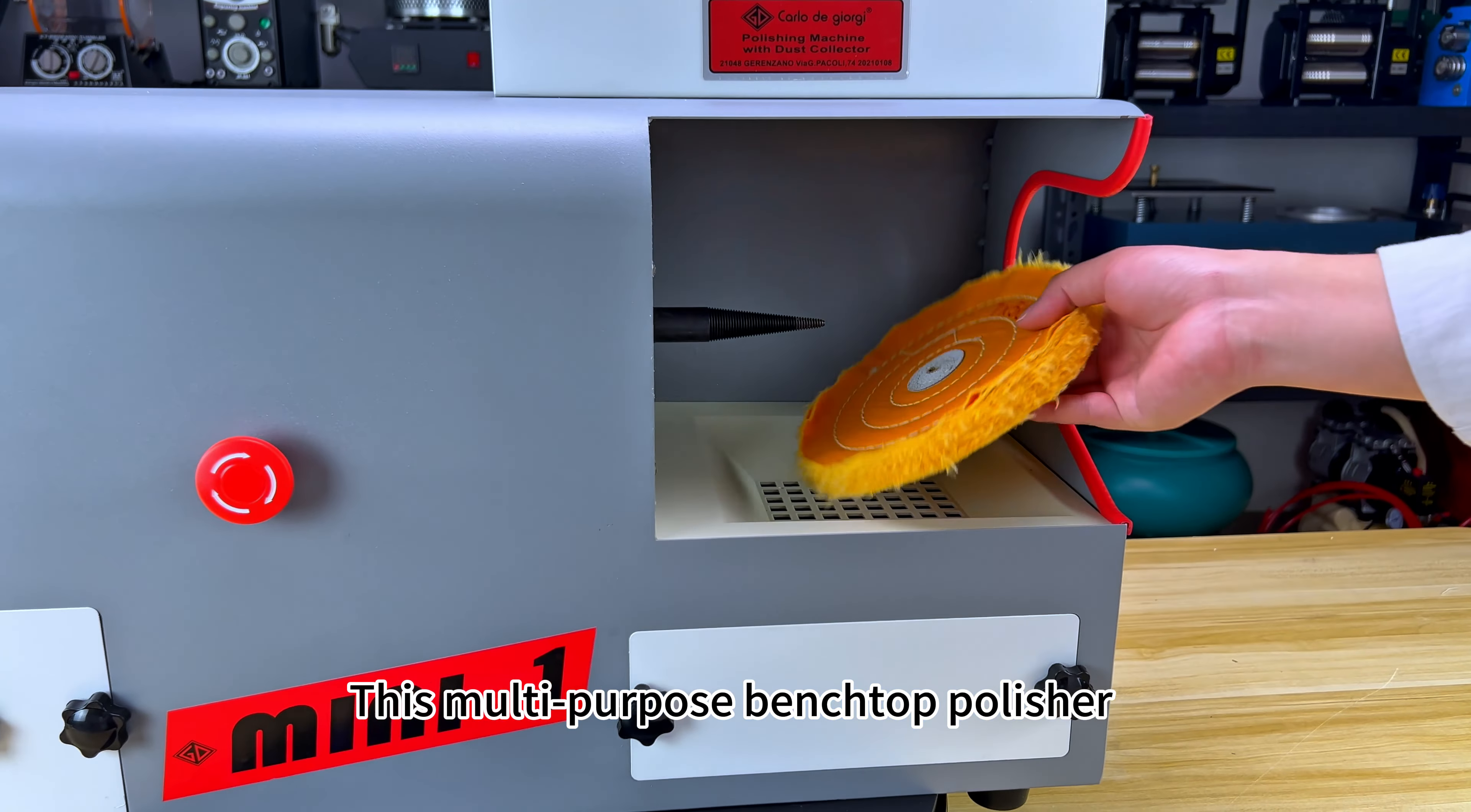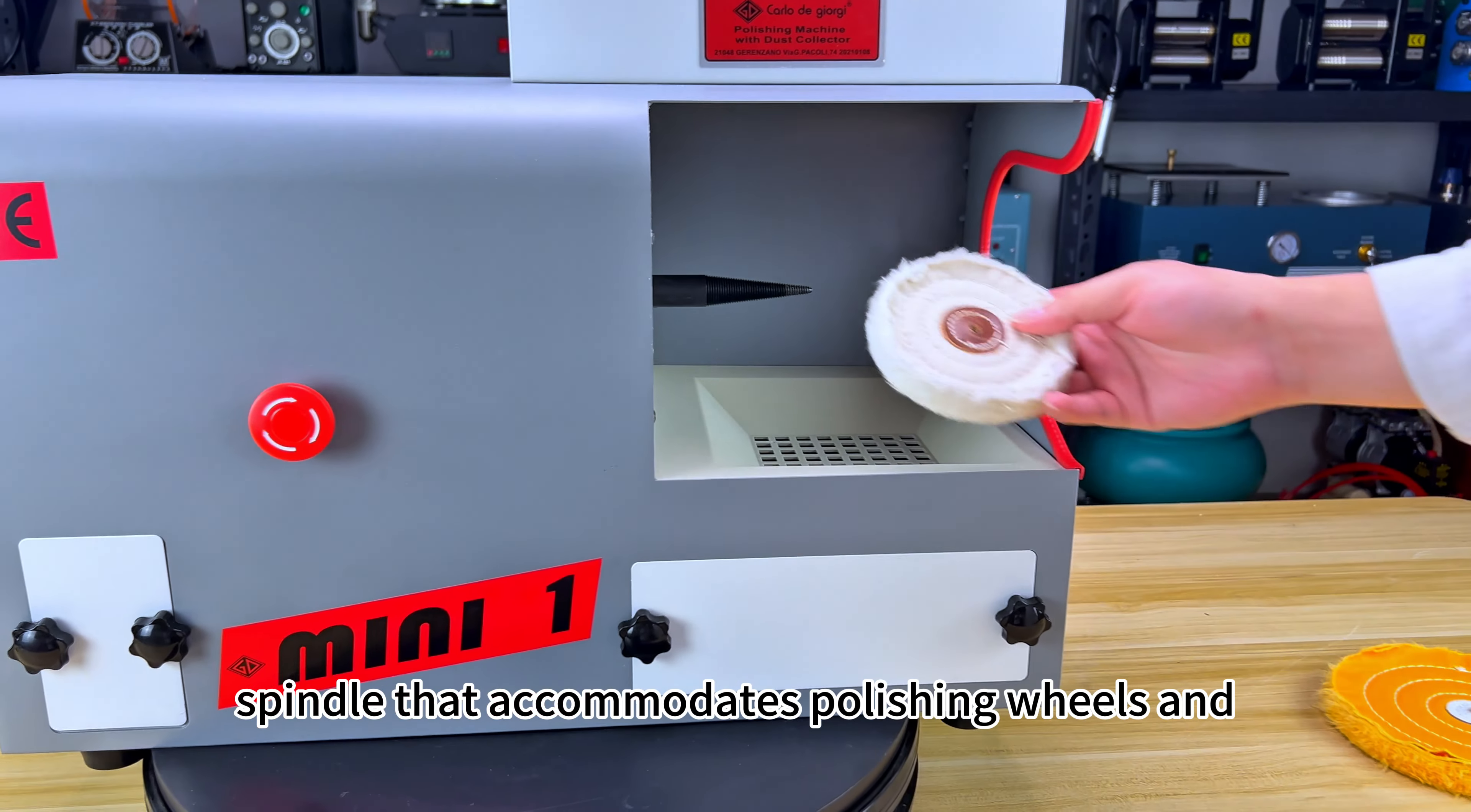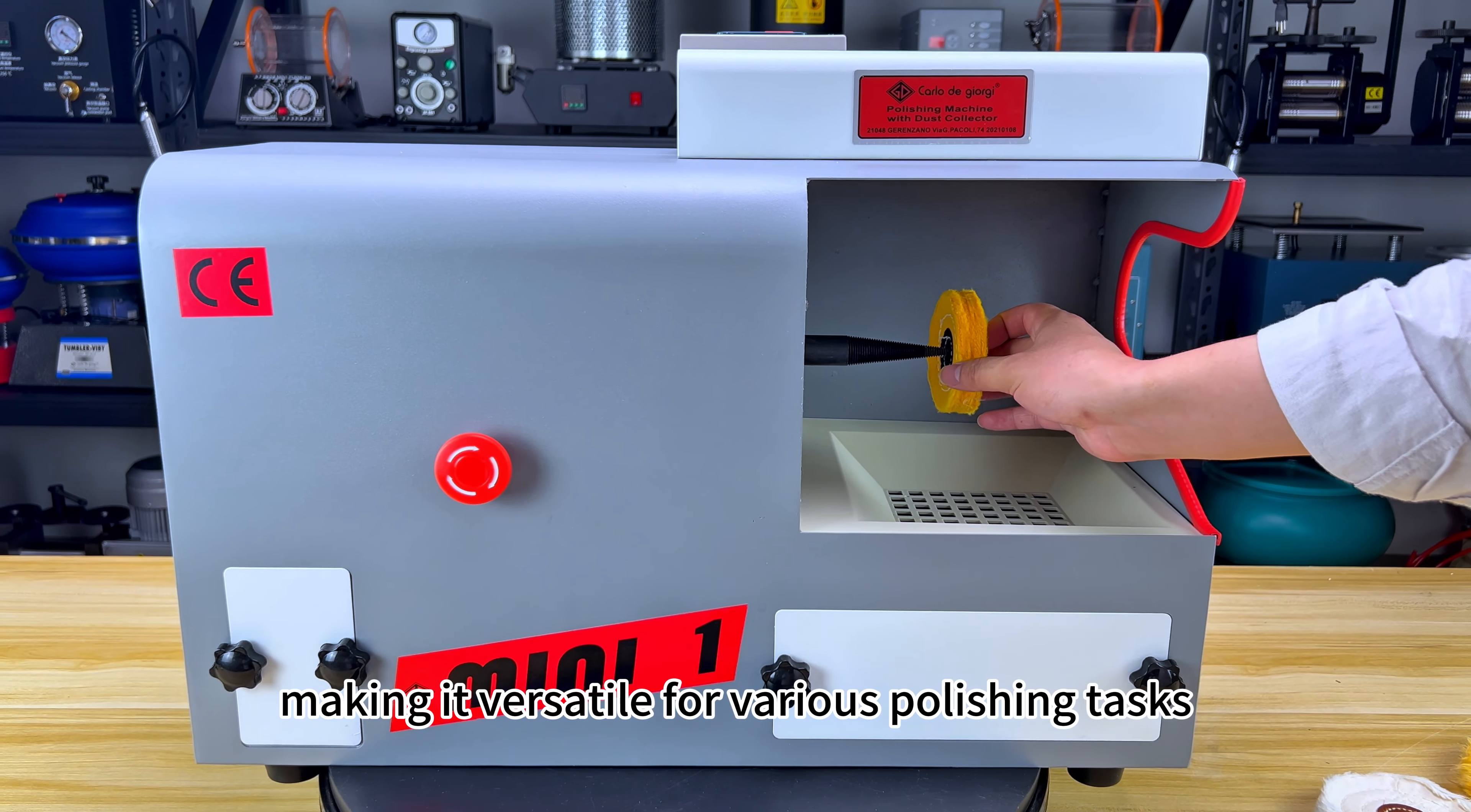This multi-purpose benchtop polisher is equipped with a tapered spindle that accommodates polishing wheels and brushes up to 7 inches in diameter, making it versatile for various polishing tasks.